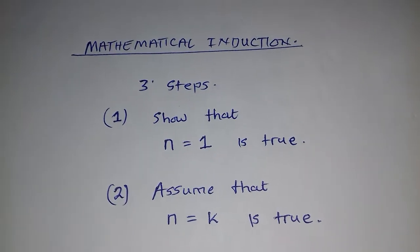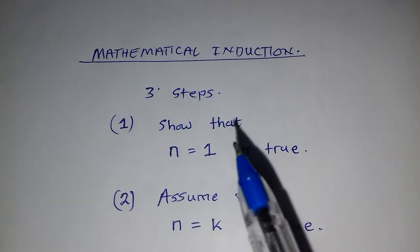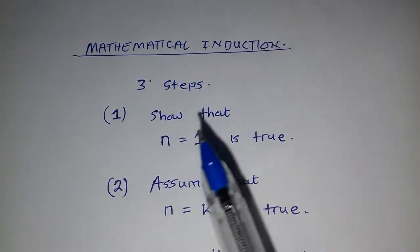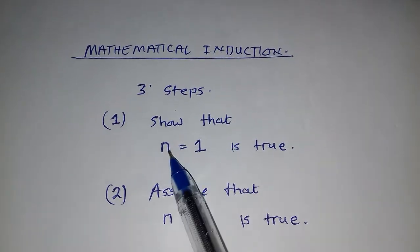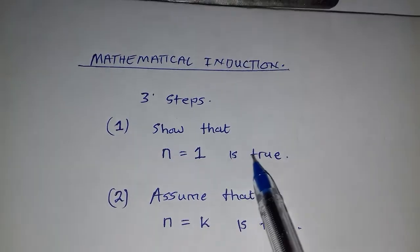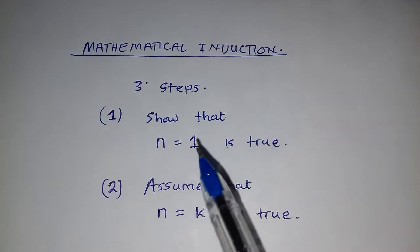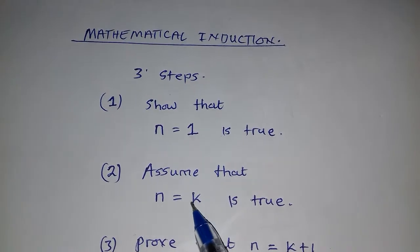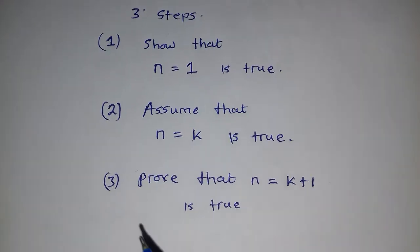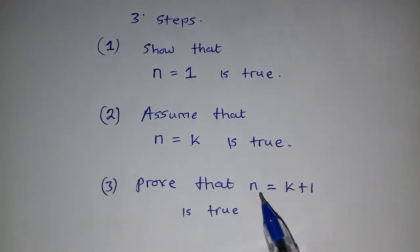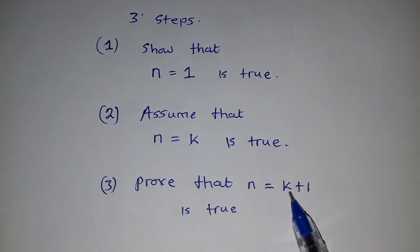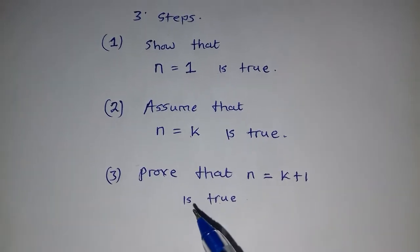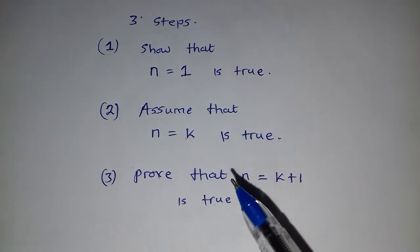Mathematical induction. There are only three steps that we follow under mathematical induction. The first one: show that n is equal to 1 is true. Number two: assume that n is equal to k is true. Number three: prove that n is equal to k plus 1 is true. Now, how do we use these three? Let's solve one question.